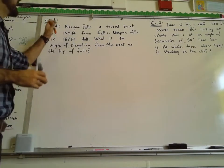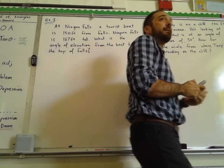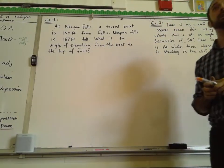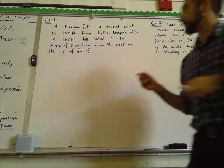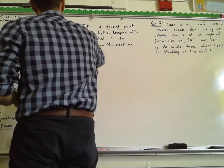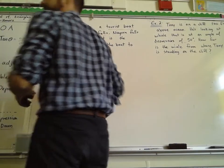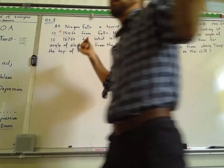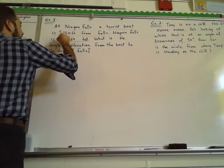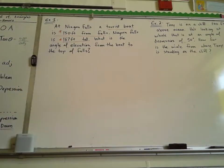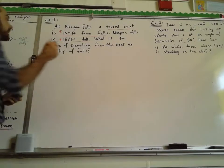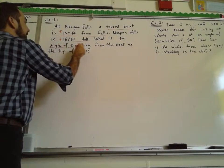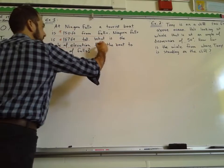At Niagara Falls, a tourist boat is 150 feet from the falls — 150 is definitely important. Niagara Falls is 167 feet tall — they've got to know how tall this is. What is the angle of elevation from the boat to the top of the falls? Angle of elevation, from the boat to the top of the falls.